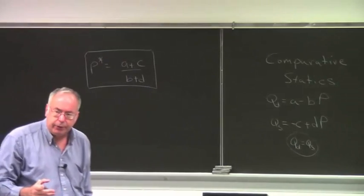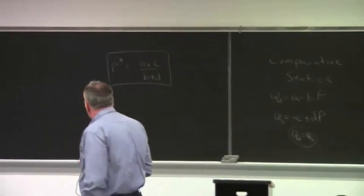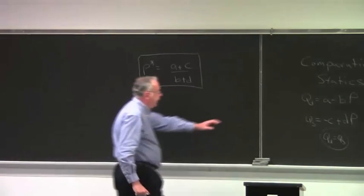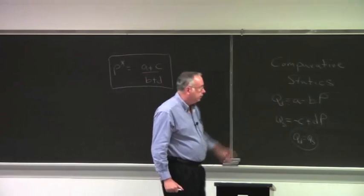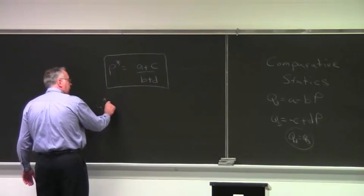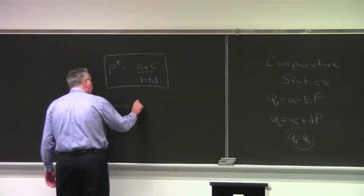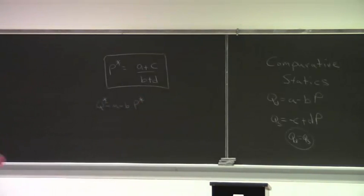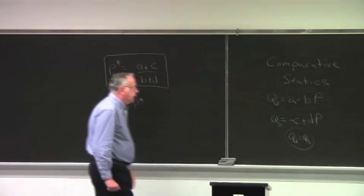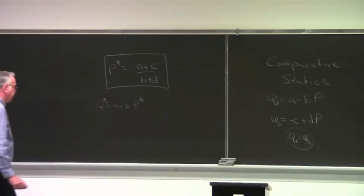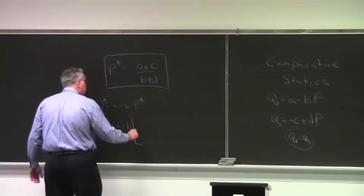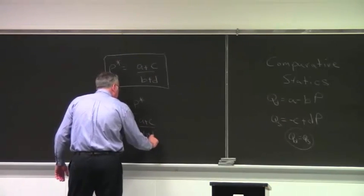This is just repeating stuff we did in chapter 3. If we wanted the equilibrium quantity, all we would have to do is go back to either the demand curve or the supply curve and substitute in for P. Going back to the demand curve and substituting in for P, q* equals a minus b times p*. We know what p* is, so we can substitute that expression in.